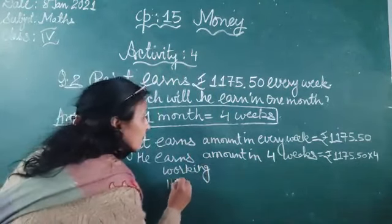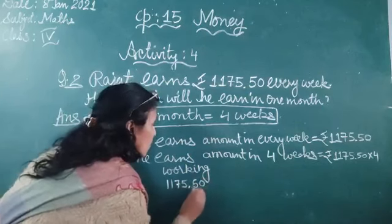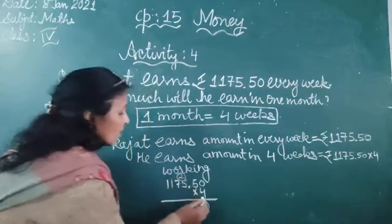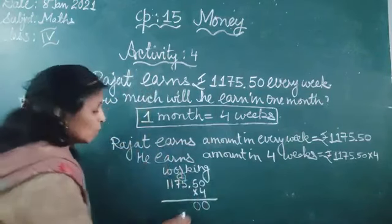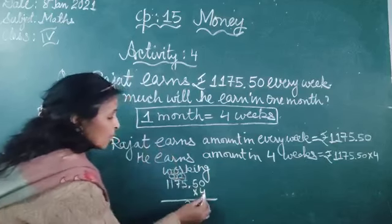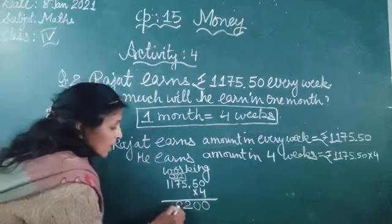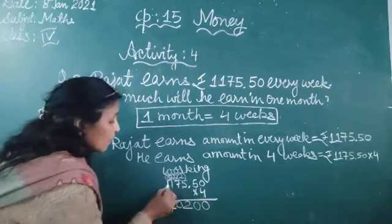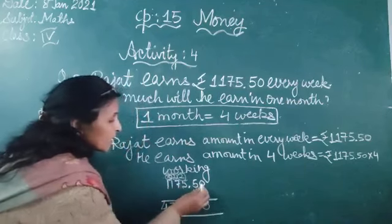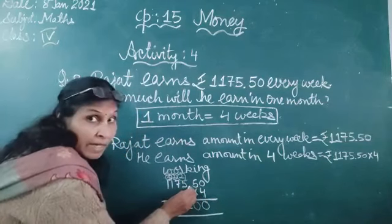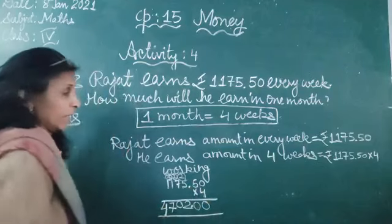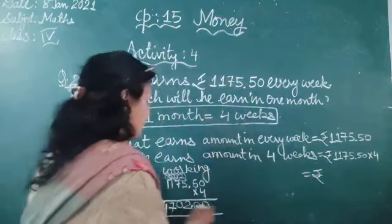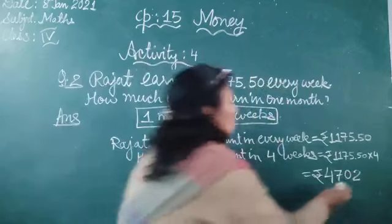Now let's do the working: 1175.50 multiplied by 4. Four zeros are zero. Four fives are 20, write zero carry two. Four fives are 20, plus 2 is 22, write two carry two. Four sevens are 28, plus two is 30, write zero carry three. Four ones are 4, plus three is seven. Four ones are four. Now put the decimal sign. We get rupees 4702.00.